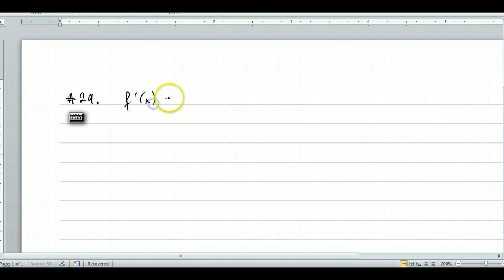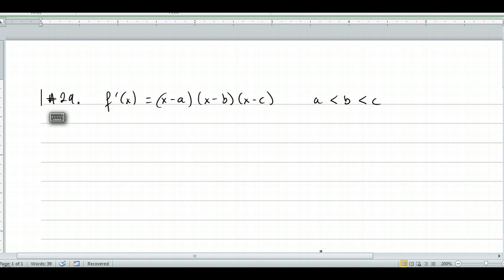So what do we have here? We have the derivative of a function, question 29. We have the derivative of a function that is x minus a times x minus b times x minus c. And the question is, which of the following could be the graph of f?